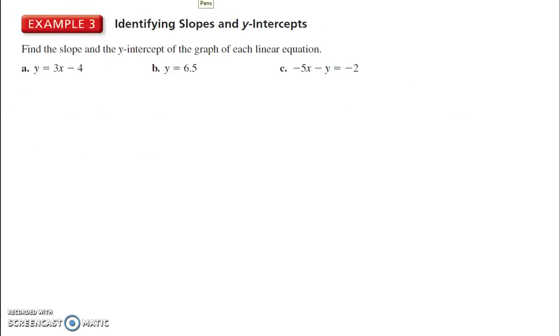Identifying slopes and y-intercepts. Very easy when it is in slope-intercept form because m is the slope and y equals mx plus b. So m is 3. So the slope is 3. y-intercept b is negative 4. Very important that it's negative 4 because we're adding a negative 4 here.